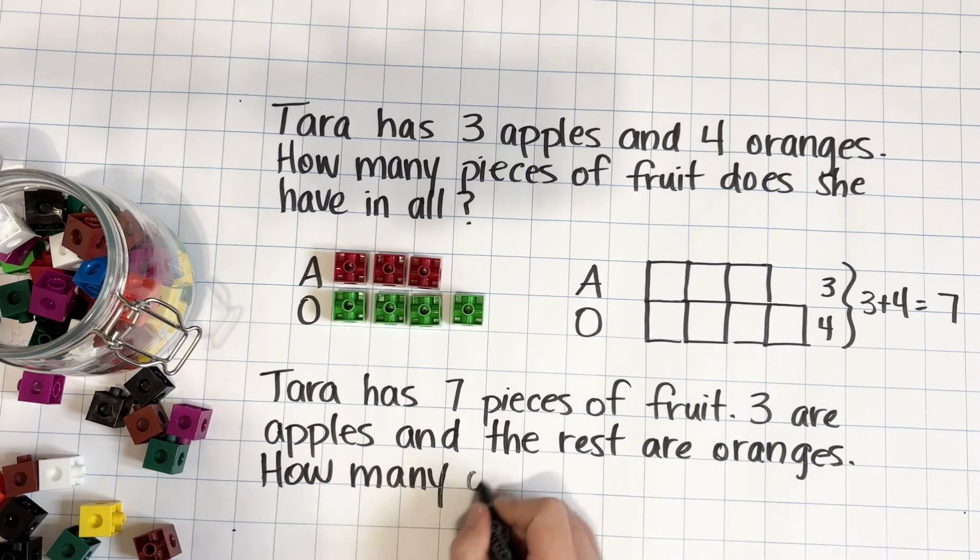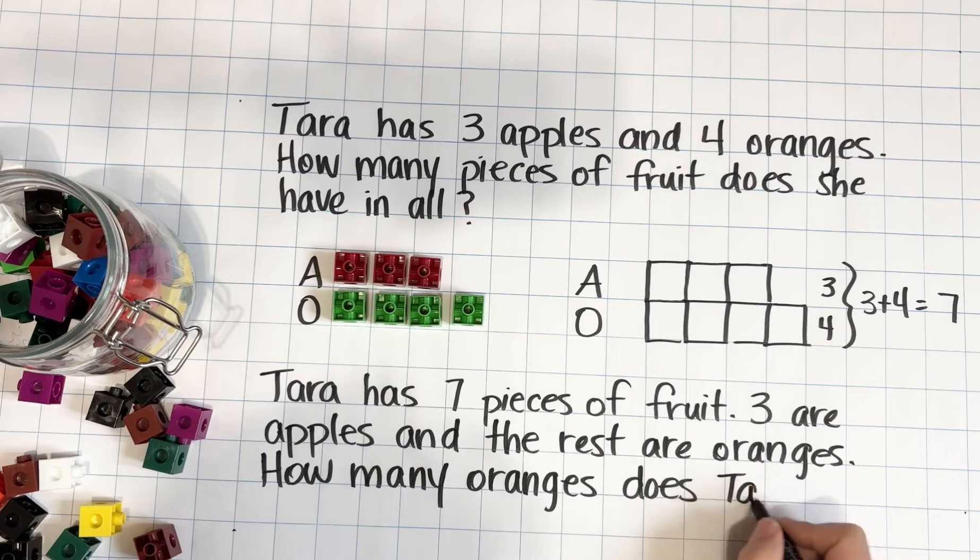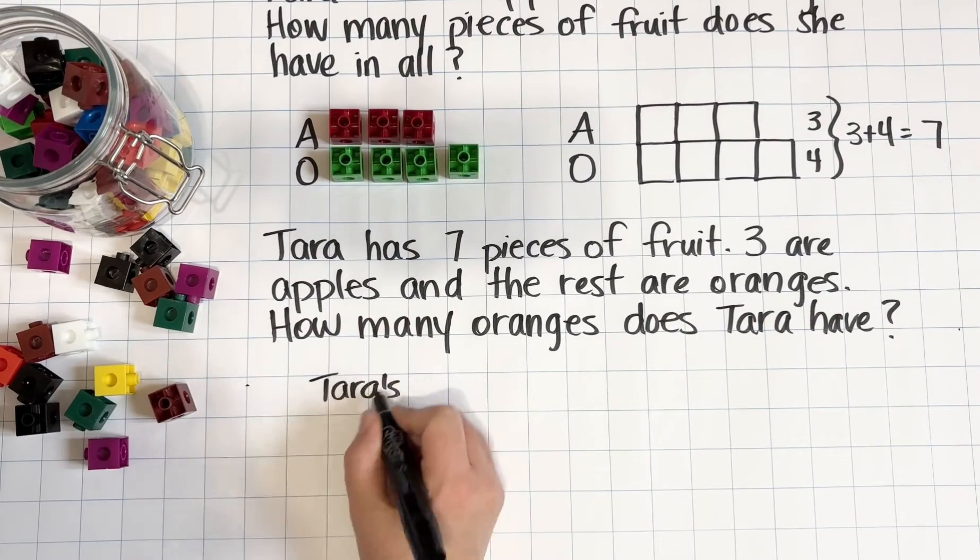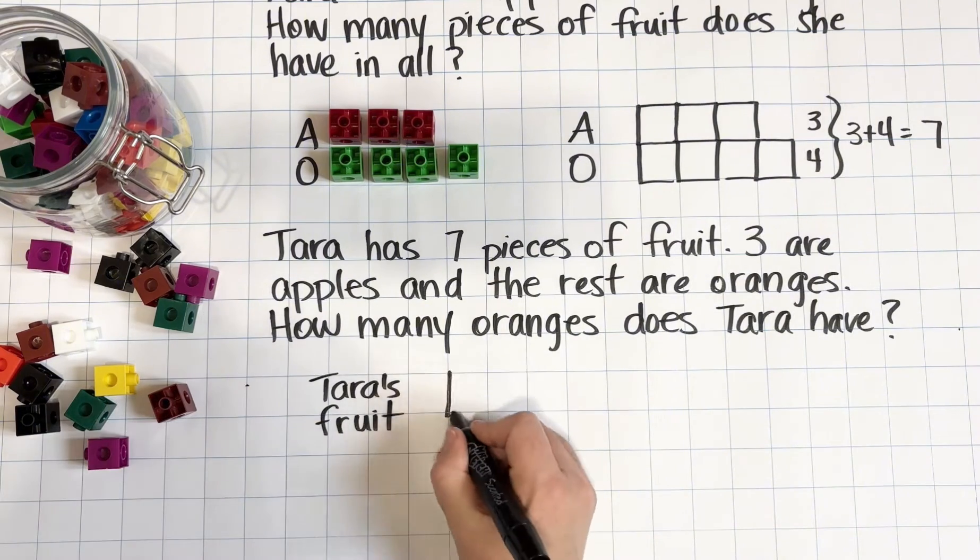This time, instead of making two bars, we are just going to make one bar because we have one variable, which is pieces of fruit. So here's what that is going to look like.